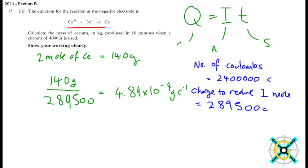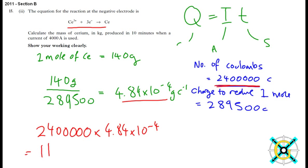So if we, in total, used 2,400,000, this number here coulombs, we just multiply these two together. So 2,400,000 times 4.84 times 10 to the minus 4, we get 1161.45 grams.